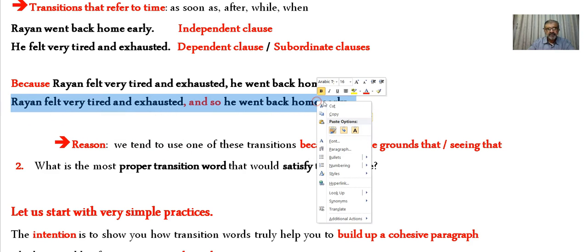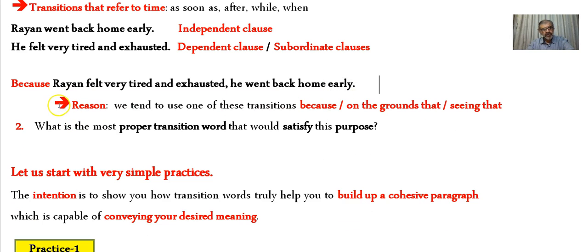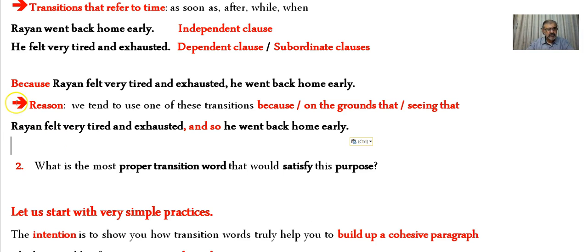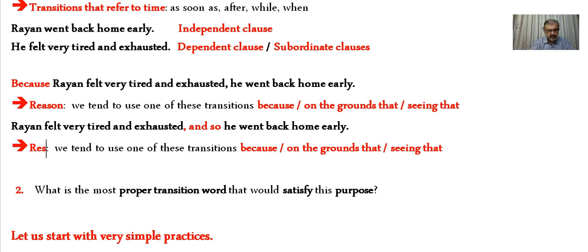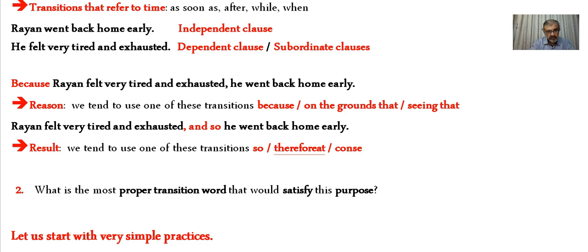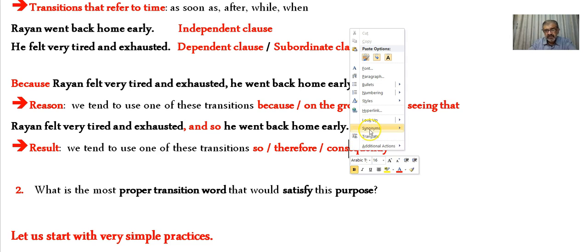Now let's look at result transitions. For result we use transitions like 'so', 'therefore', 'consequently', 'thus', 'accordingly', 'subsequently', 'as a result' — they all convey the same meaning but add variety and color to your writing and communication.